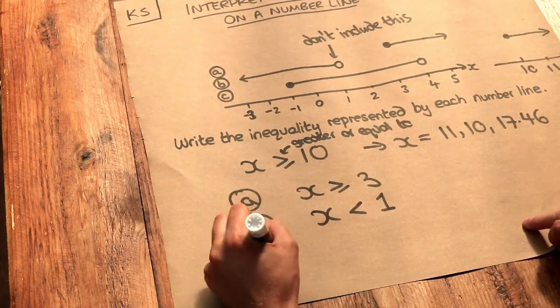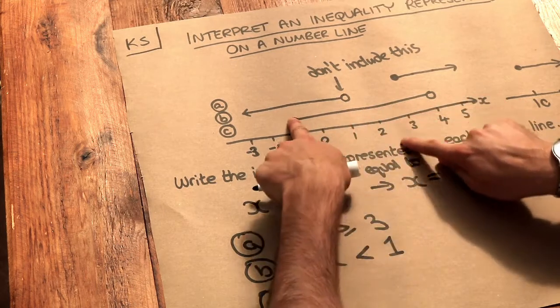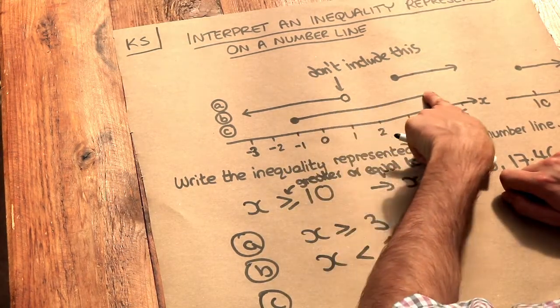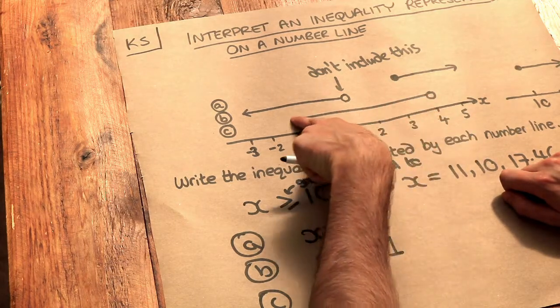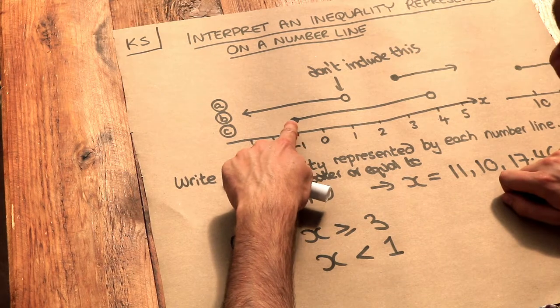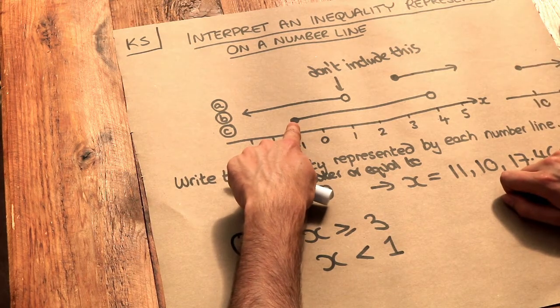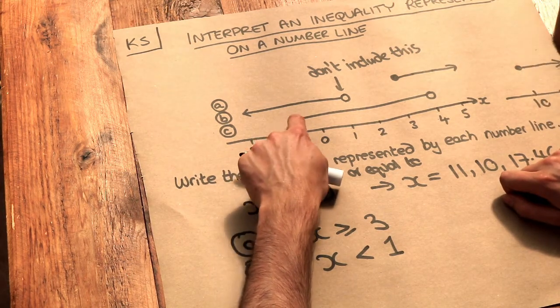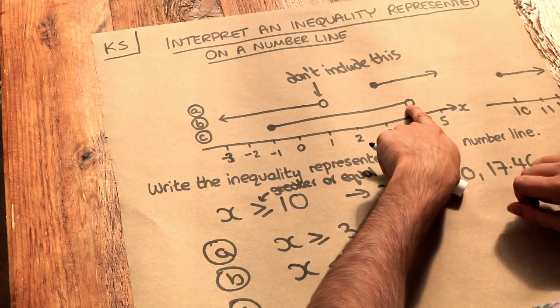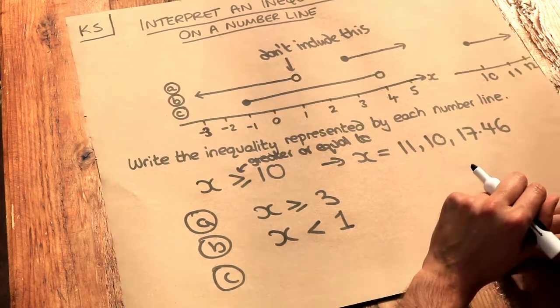And finally, let's look at c. We've got a line between minus 1 and 4. So that's suggesting that x can be any value between minus 1 and 4. Now, there's a filled circle there. So x can be minus 1. The fact it's filled indicates you want to include it. But this is an open circle. It's not filled. So we don't want to include the 4.